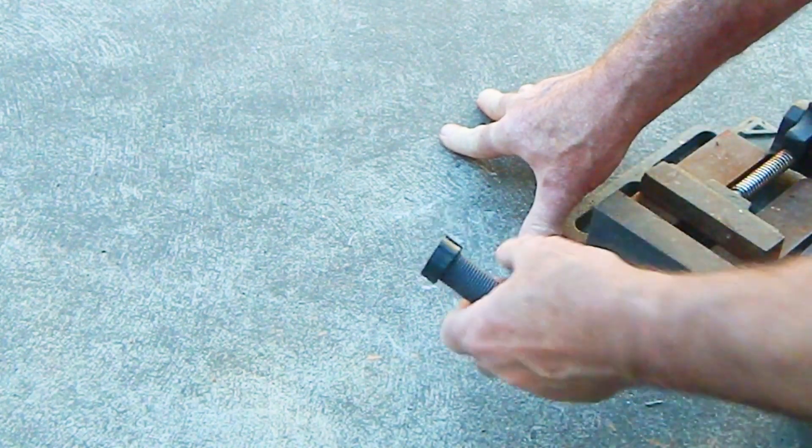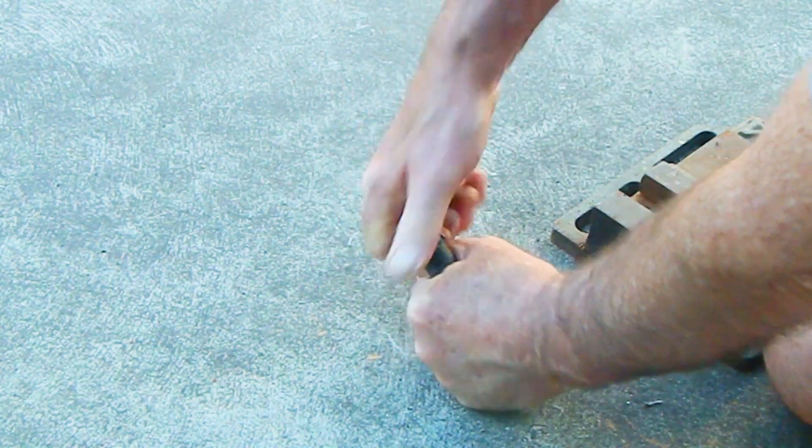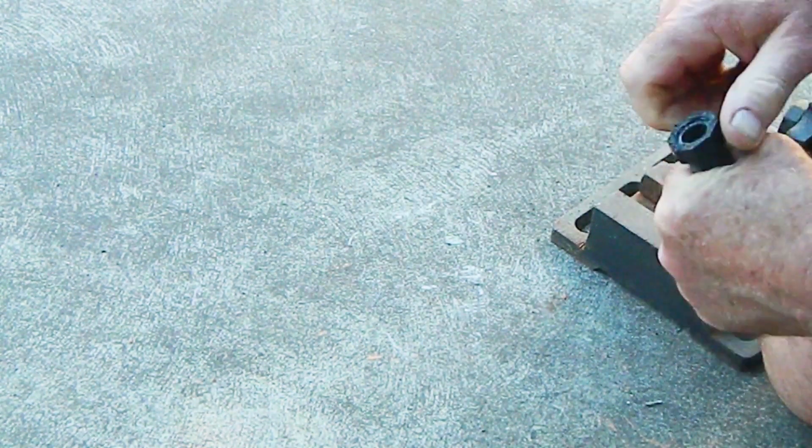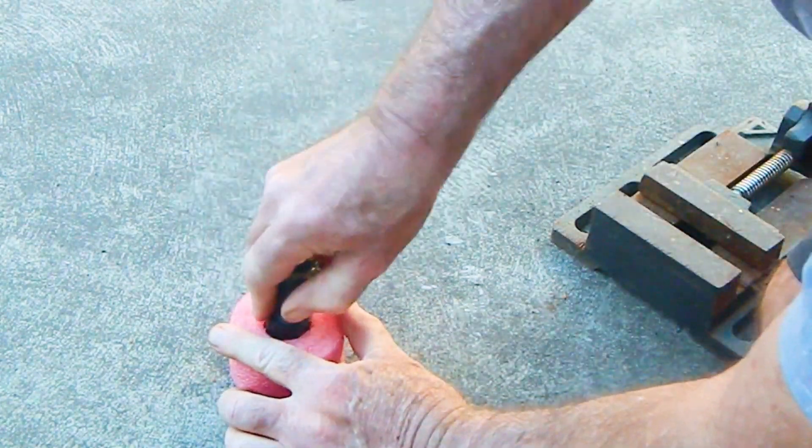Screw the all thread poly riser into the 30mm piece. Screw the other end of the all thread poly riser into the 10mm piece. Insert the 30mm piece into the lower float.